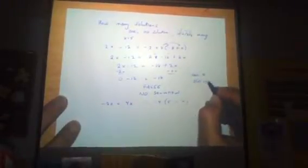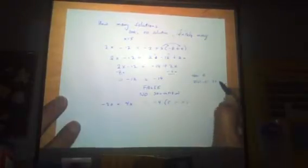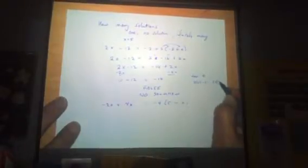Why no solution? Because if we were to plug in numbers for x, no matter what we chose, I could plug in test 0. We would get 2 times 0 minus 12 equals negative 2 plus 2 times negative 8 plus 0.